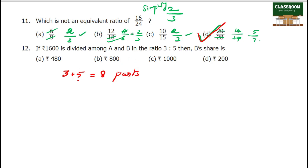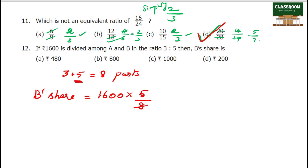B part is 5 by 8. B share 1, A share 1. Total amount is 1,000. So B share is equal to 5 by 8. Then A gets 260, A gets 210 — and B's share is calculated accordingly. Next topic: proportion.